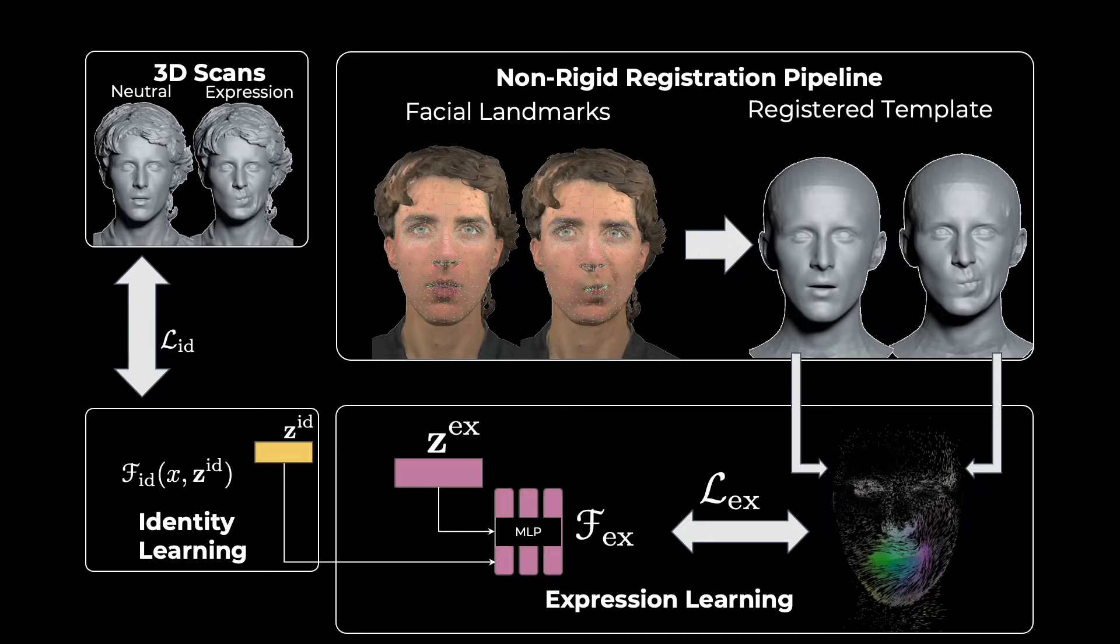We model expressions as forward deformations from the neutral pose. For this, we compute one-to-one correspondences between points in canonical and pose space using our non-rigid registration pipeline. In a second step, we derive ground truth deformation fields to directly supervise our expression network.